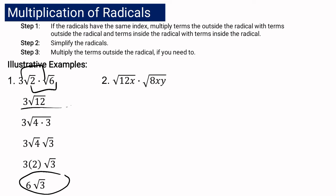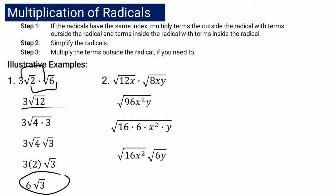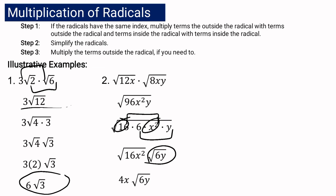Let us proceed with example number 2. We have square root of 12x multiplied by square root of 8xy. Here you just multiply the radicands: 12x multiplied by 8xy gives 96x squared y. This expression can be simplified. The correct factors of 96 are 16 times 6, then copy x squared and y. Combining, the square root of 16x squared gives 4x, and the remaining expression square root of 6y cannot be simplified. So the final answer is 4x square root of 6y.